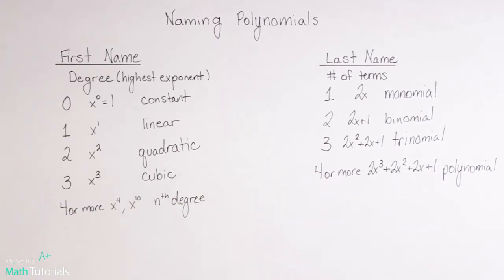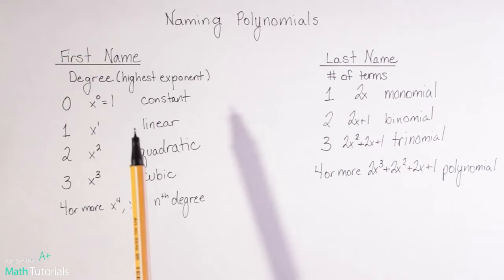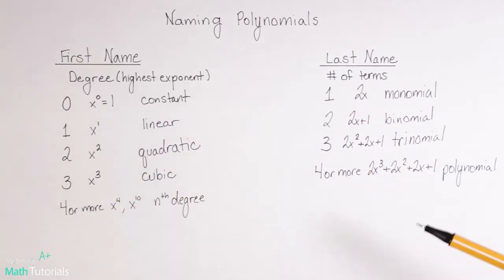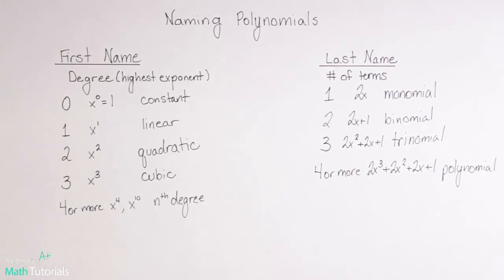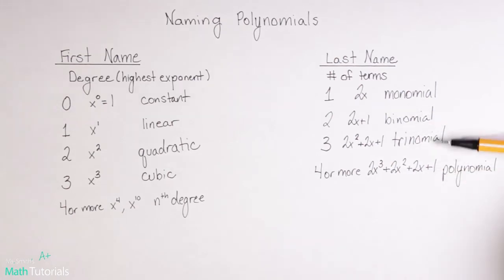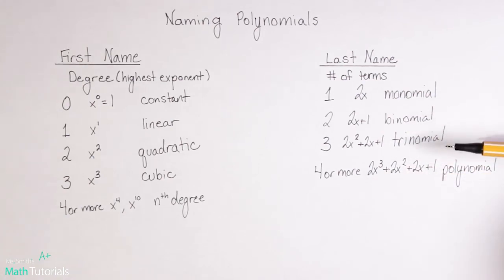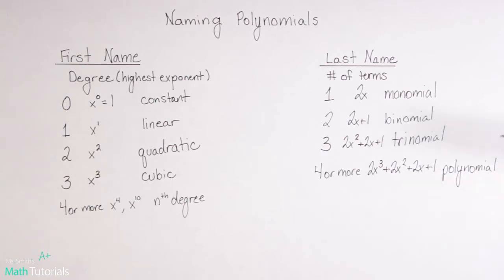You might be thinking, why does any of this matter? Why does it matter what a polynomial's first name or last name is? The purpose is that once we get into solving problems — even later in this chapter and especially in our factoring unit — whether something is a binomial, a trinomial, or a polynomial very much matters in how we solve it. You need to look at an expression and say: is it a binomial, a trinomial, or a polynomial? Because that determines how you solve the problem.